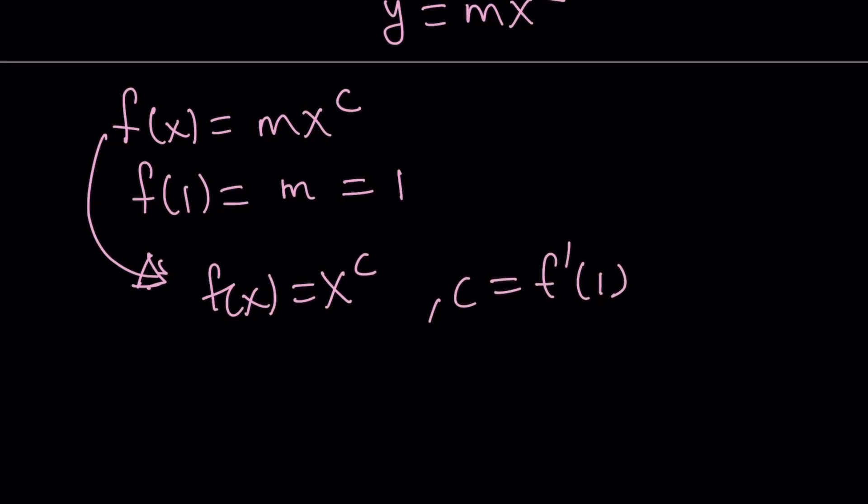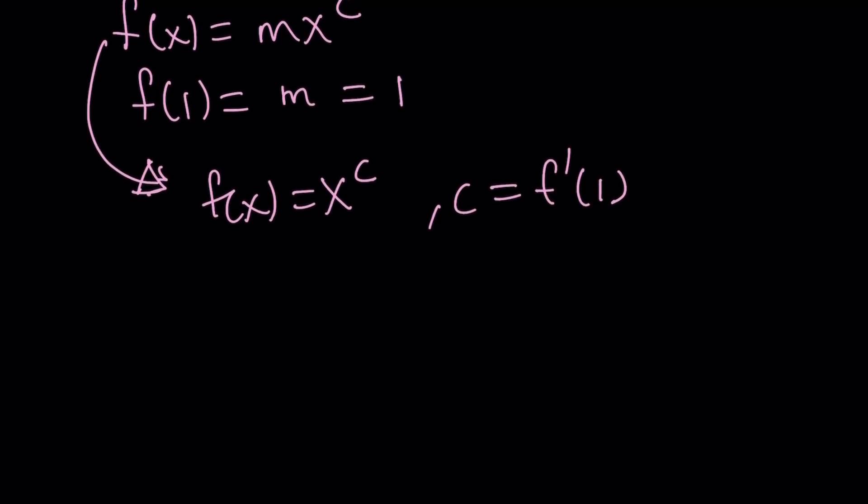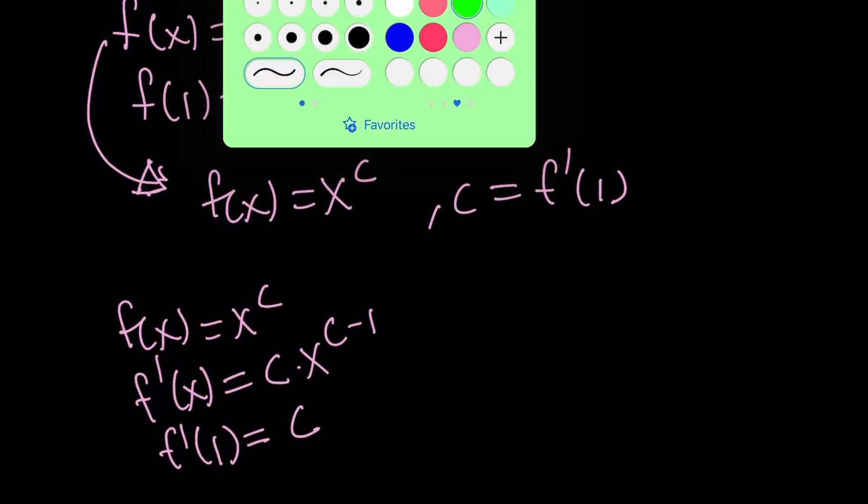That's something we can use to evaluate m. f of 1 from here is going to be m, so m equals 1. Since m equals 1, we can write f of x as x to the power c, and c is f prime at 1. That basically gives us the solution.